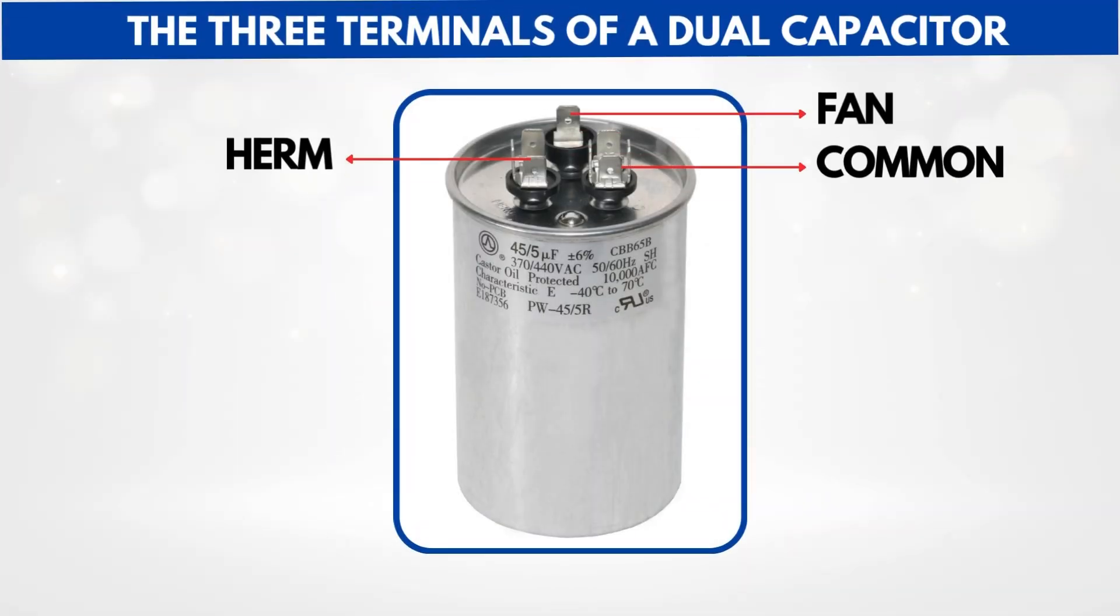The Three Terminals of a Dual Capacitor. A dual capacitor has three terminals, and each one has a specific role. C-common. This is the central connection point that connects to both the fan and the compressor.